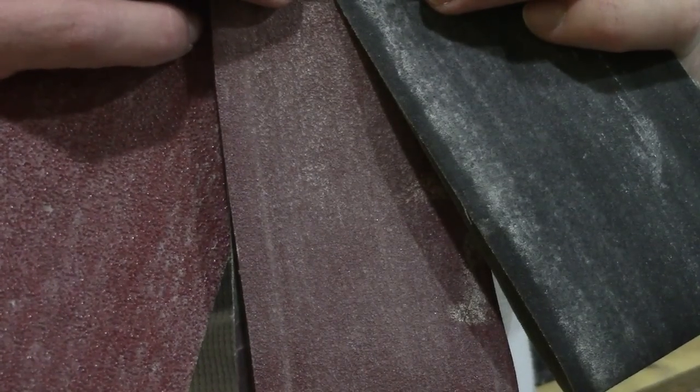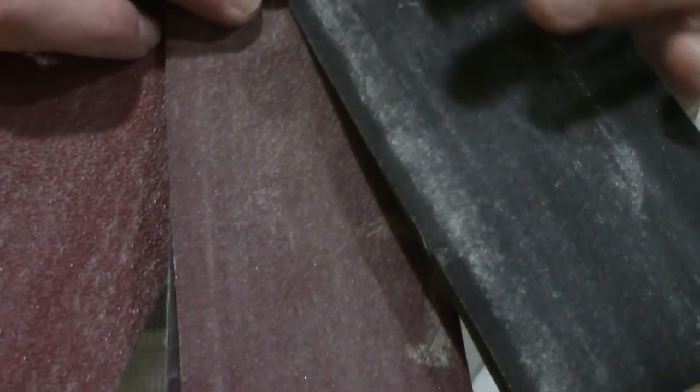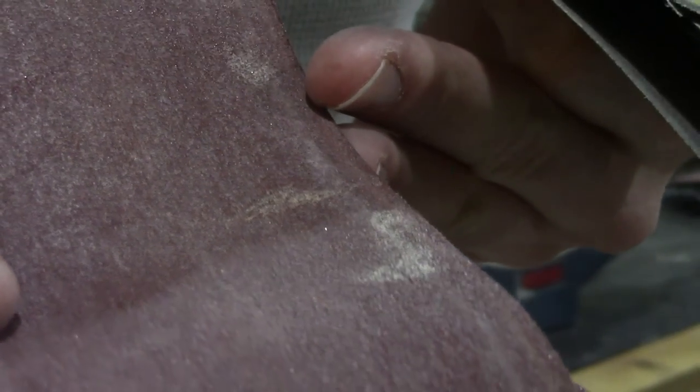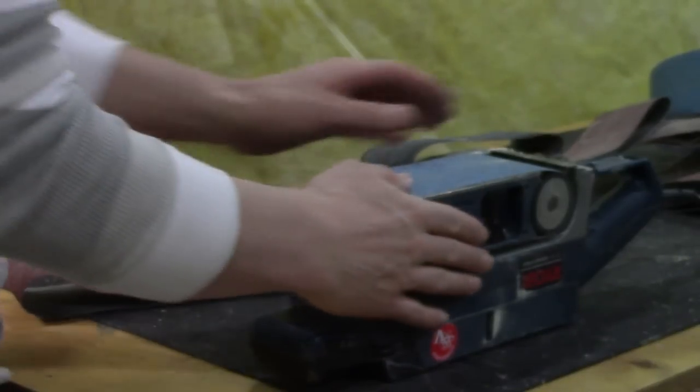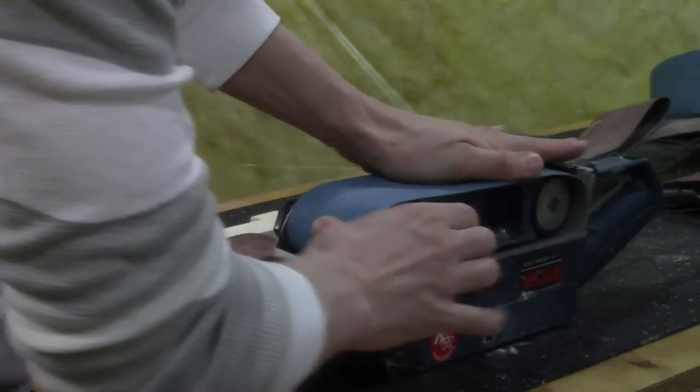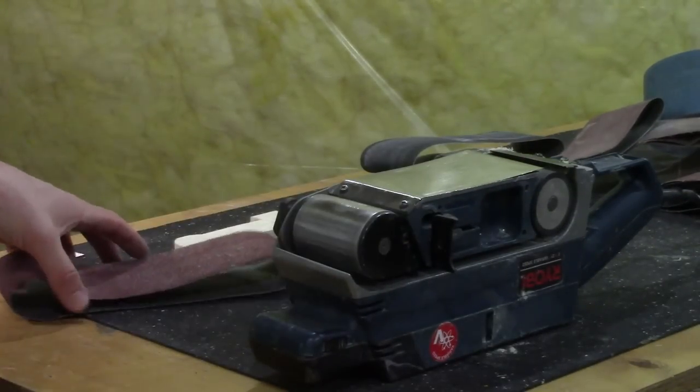I'm going to use three different grits of sandpaper. Sandpaper is classified by grit and the higher the number the finer the grit or the smoother the finish you're going to have on your wood. So I'm going to start with the roughest grit first and this is going to take off as much wood as possible. This grit is a 40 grit sandpaper.